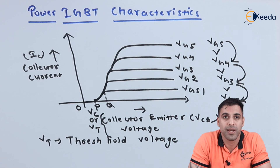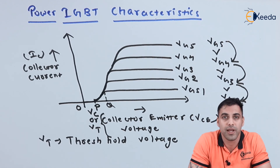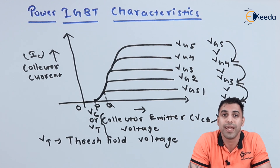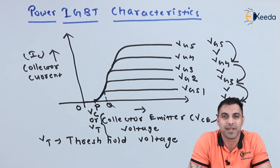For a specific gate-emitter voltage, after a certain value of the collector-emitter voltage, the collector current becomes constant and the device turns on. If we further increase the gate-emitter voltage, the value of the collector current IC keeps on increasing. This is all about the power IGBT characteristics. Thank you so much for watching. Please subscribe to Ikeda and stay tuned. Thank you.